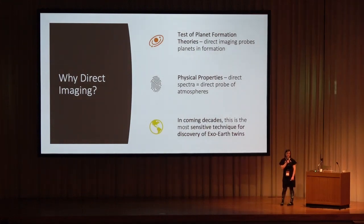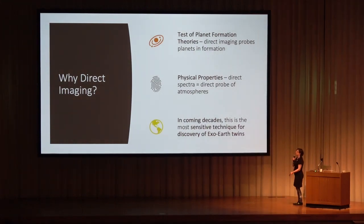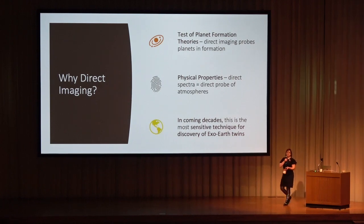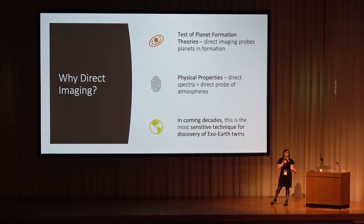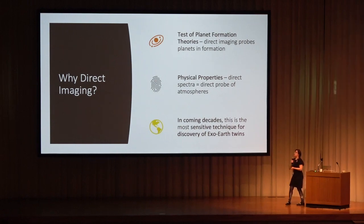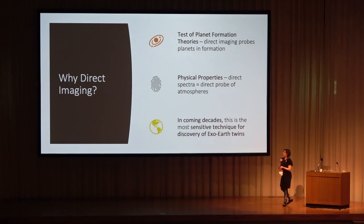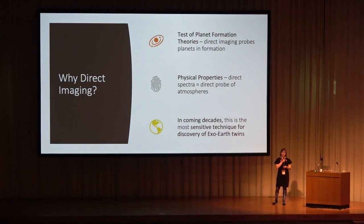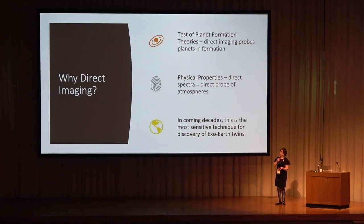Why should you care about direct imaging of exoplanets? Three reasons. First, the exoplanets we're directly imaging right now are young giant hot planets right around their epoch of formation or slightly afterwards, so this is a way to test planet formation theories. Second, we have photons directly from the planets themselves, meaning we can really characterize their atmospheres and physical properties in great depth. And third, in the more long term, this is the technique most sensitive to exo-Earth twins. If you want to image a planet like our own around a G star with a period of about one year, this is the way to go.